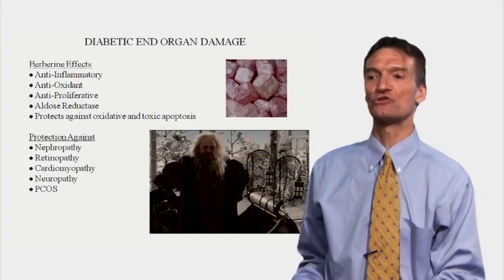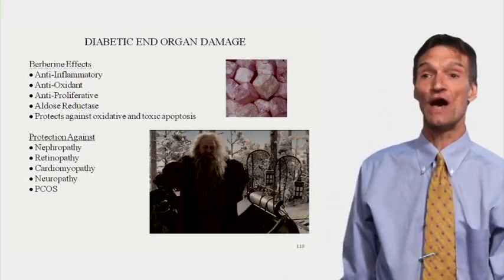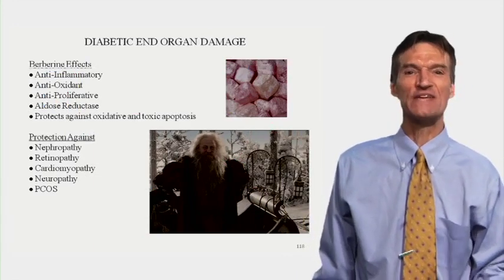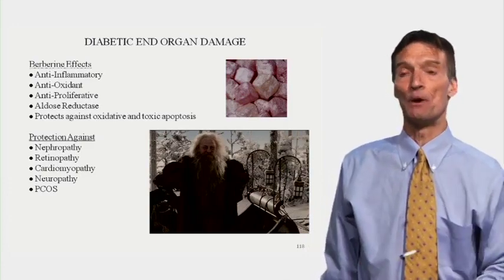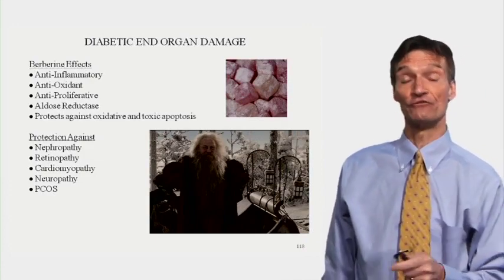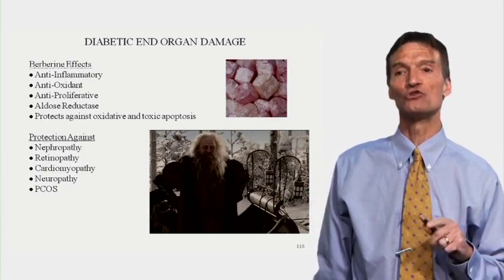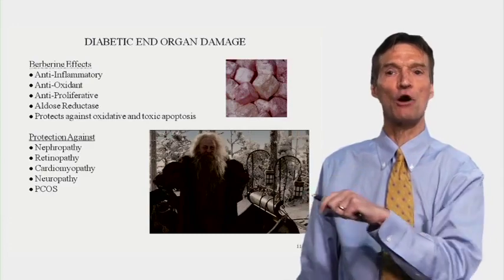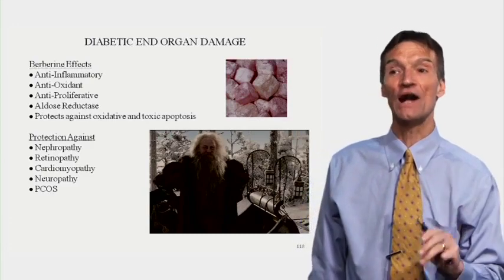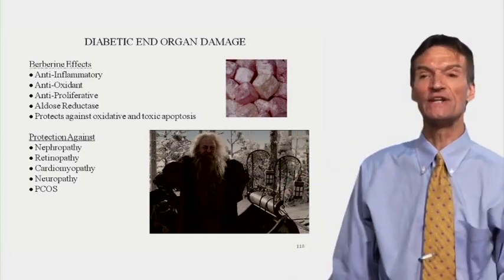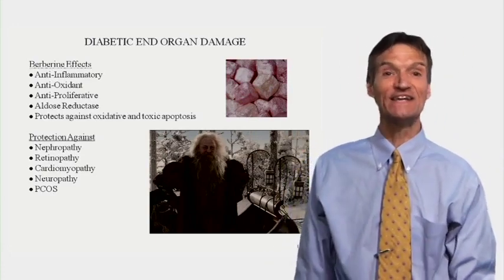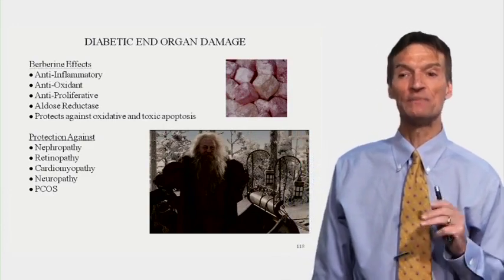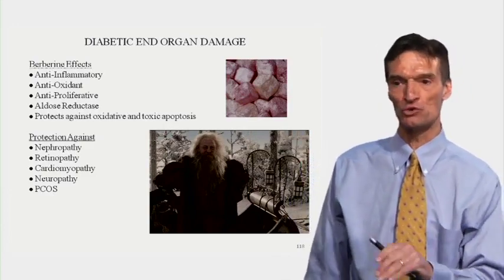Our overweight type 2 diabetic has been eating too much Turkish delight. We don't just want to lower sugar — we want to protect against the end organ consequences of hyperglycemia. Berberine not only lowers sugar; it lowers inflammation, has antioxidant function, lowers cell proliferation rate, blocks aldose reductase (which converts glucose into sorbitol causing cell swelling), and protects against oxidative and toxic apoptosis. We would predict that berberine is protective against diabetic kidney disease (nephropathy), diabetic eye disease (retinopathy), diabetic cardiomyopathy, diabetic peripheral neuropathy, and PCOS — polycystic ovarian syndrome.